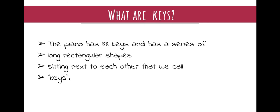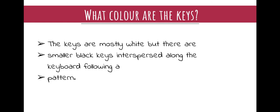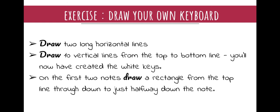The piano has 88 keys — a series of long rectangular shapes sitting next to each other, which we call keys. That's where the name 'keyboard' comes from: keys on a board. Think of the shape of an ironing board, long and rectangular, with long vertical rectangular shapes placed along it. The keys are mostly white, but there are smaller, slightly shorter black keys interspersed along the keyboard in a certain pattern. For your exercise at home, get a blank piece of paper and draw two long horizontal lines, then draw 10 vertical lines from top to bottom to create your white keys.